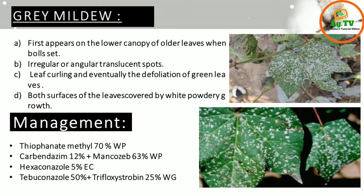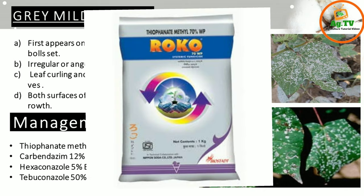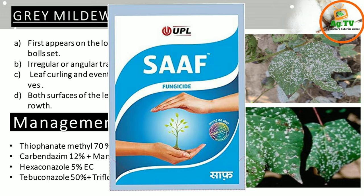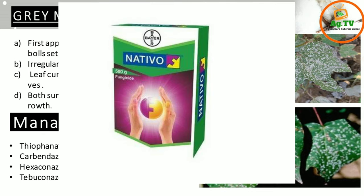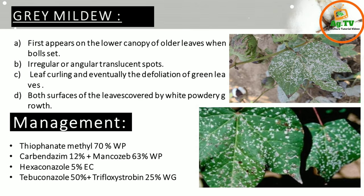For management of grey mildew, you can use a fungicide because it is a fungal infection. You can use Thiophanate-methyl 70% WP, Carbendazim 12% + Mancozeb 63% WP, Hexaconazole 5% EC, or Tebuconazole 50% + Trifloxystrobin 25% WG. You can see photos on the screen.